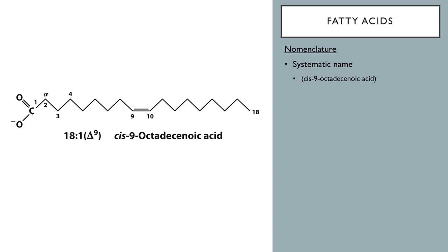We note the double bond by the position of the carbon closest to the carbonyl group. For fatty acids, the carbon with the carboxylic acid group is number one, then we count two, three, four... nine. If the double bond is between the ninth and tenth carbons, it's Δ9. In this case the double bond is in the cis conformation, so it's cis-9-octadecenoic acid. Most fatty acids also have common names based on where they're found — for example, this molecule is also called oleic acid.